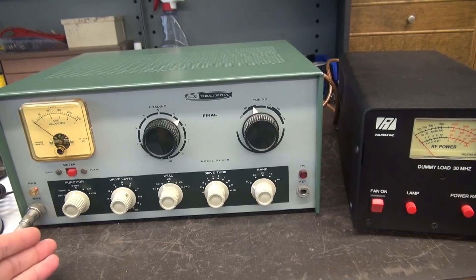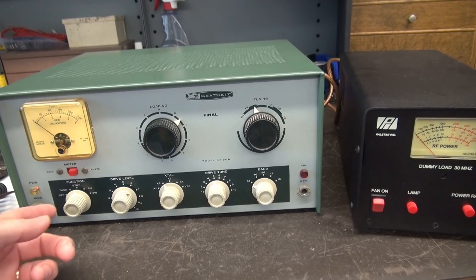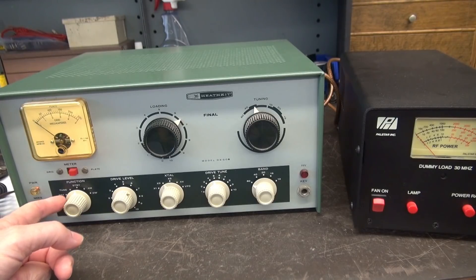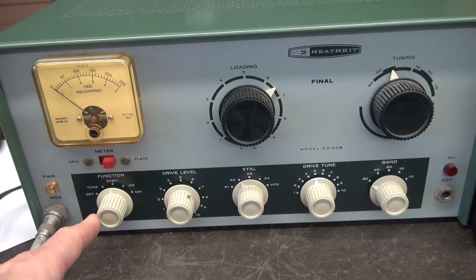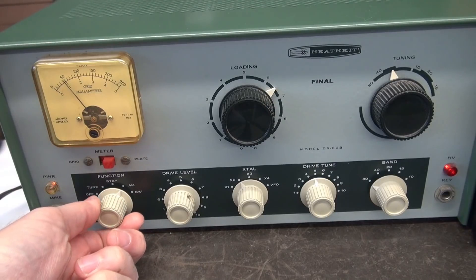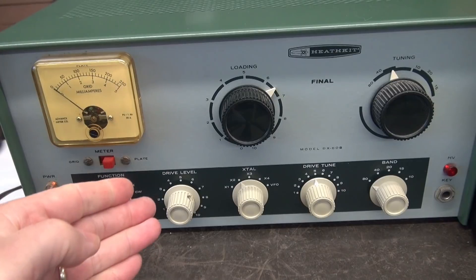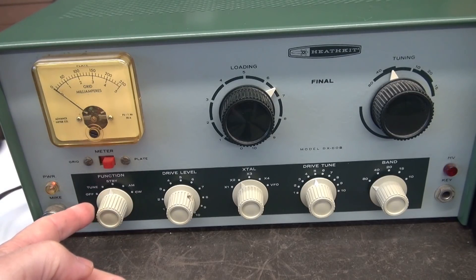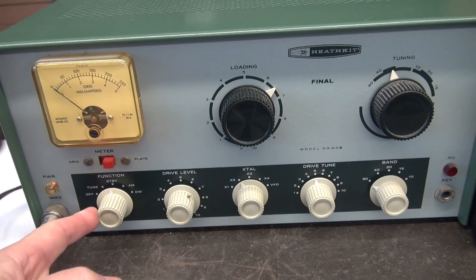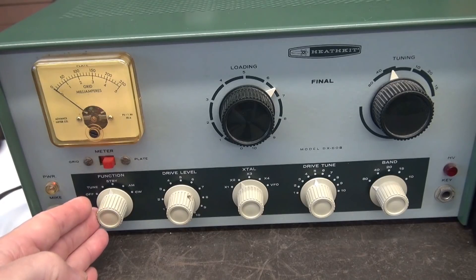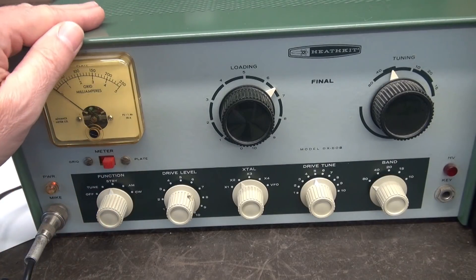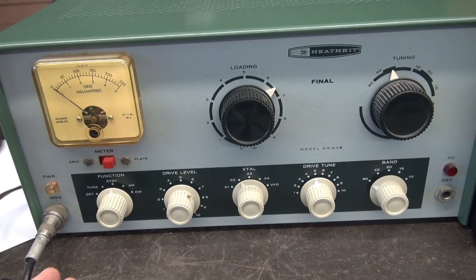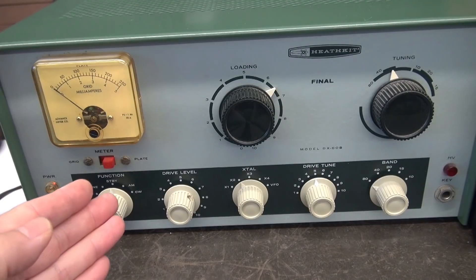Here is the DX60B that we're going to install push-to-talk into. The function switch has the same positions as the Ranger: off, tune, standby, AM and CW. The DX60 utilizes the same type rotary switch that the Ranger does. So if you want to transmit you have to go to AM and when you're done you have to go back to standby. Every transmission you're toggling that switch which over time will wear it out, and then you have the biggest problem - you can't find the switch. The push-to-talk option will save the wear and tear on the switch and hopefully keep these guys on the air longer.